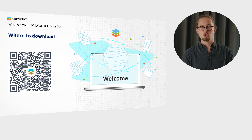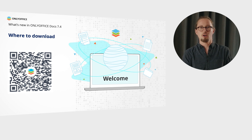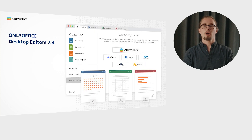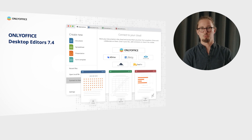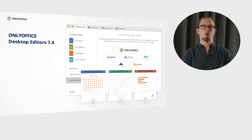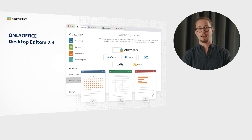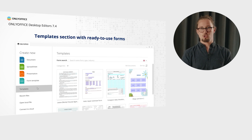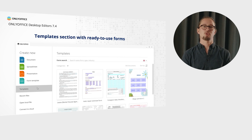Which new features do you like the most? Share it in the chat. To download the latest version of self-hosted online editors from the official website, just scan this QR code and access the download page. OnlyOffice desktop app, which allows working with all kinds of Office docs on your PC or laptop, was also updated to version 7.4. The application is built on top of the same engine as OnlyOffice Docs, so the newest version comes with the majority of features available in the online editors. Among additional enhancements, you get a template section with ready-to-use forms, allowing you to select any form from the library with just several clicks.